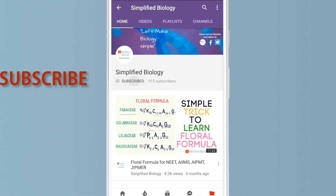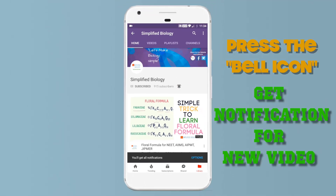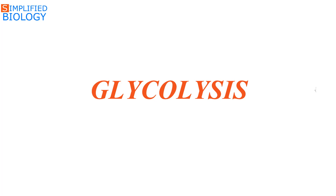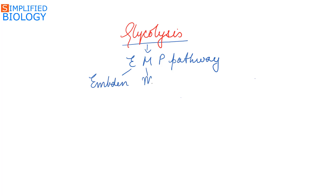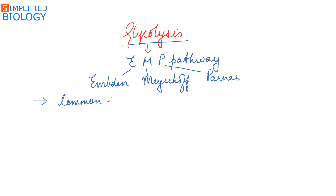Welcome to Simplified Biology. Today's topic is glycolysis, also known as the EMP pathway — named after its discoverers Embden, Meyerhoff, and Parnas. Glycolysis is a common pathway for both aerobic and anaerobic respiration.